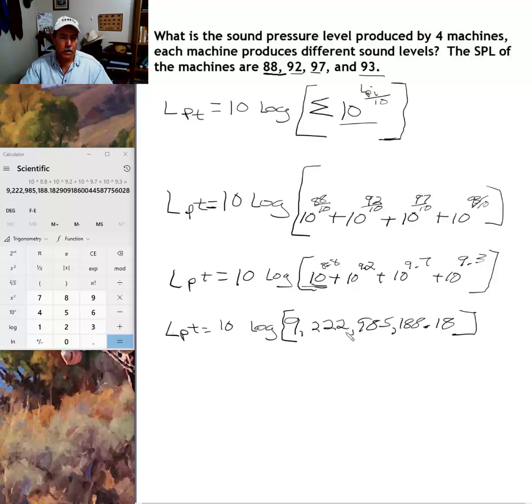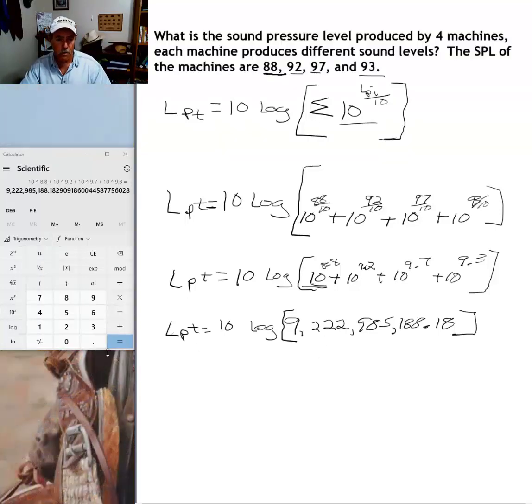All right, now we need to take the logarithm of this number, of this nine billion and change number. To do that with the Windows 10 scientific calculator, all I need to do is press the logarithm key. Again, it's going to be different with the TI-30, and we can work on that in class or individually if we need to.